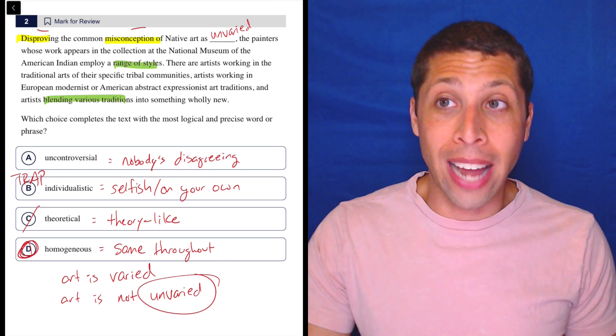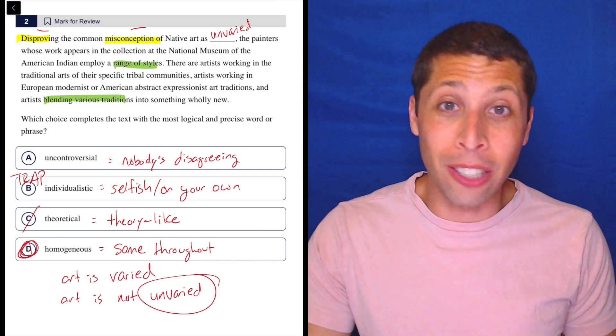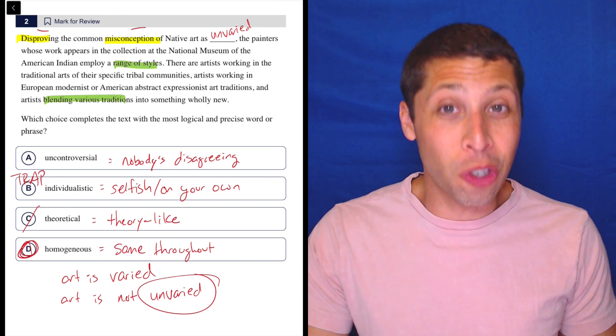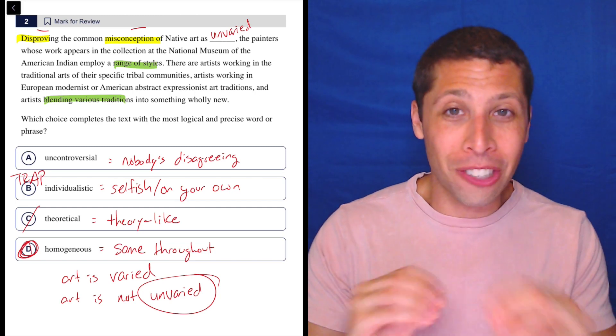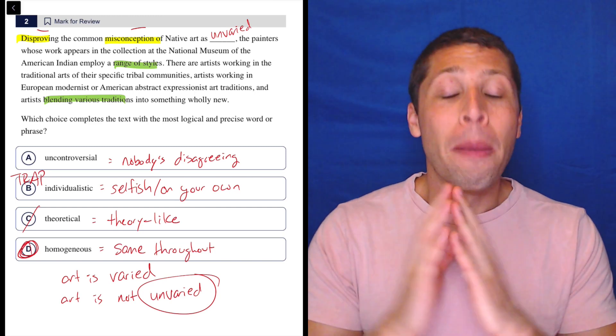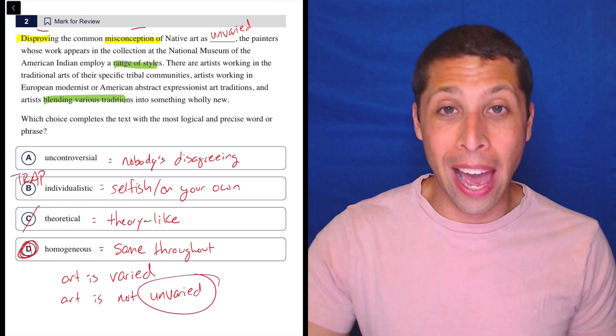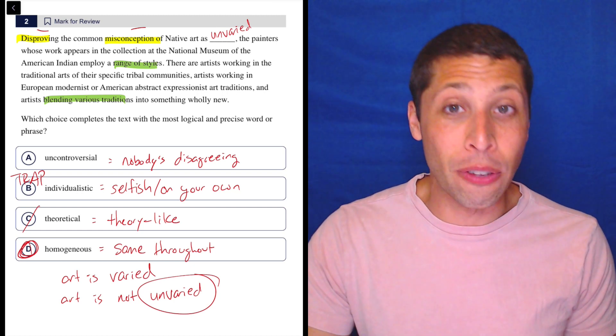So we got to have strategies for that and avoiding the hard word just because you really don't want to pick something you don't know. That's a bad strategy. Use the words you do know to make informed decisions. And then if you need to, pick the word you don't know because everything else fails. That's an okay process of elimination strategy if you need it.